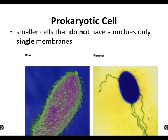All right, first term — you do not have to write it here, but you do have to write prokaryotic cell on your bingo board. You should know that those are smaller cells that do not have a nucleus and only single membranes. Up here on the screen, that real-life Patterson should be pointing at — showing two different prokaryotic cells with some weird exterior organelles.